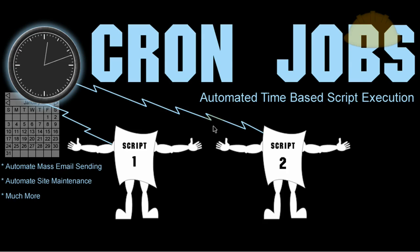Hello everybody, Adam at Flash Building. Here we have a lesson geared for people who are not yet acquainted with cron jobs. A cron job is an automated time-based script execution command that you set up at your server. It fires off to enable scripts to run automatically, so you don't have to go to your browser to make a script execute. It can be run behind the scenes, and it's time or date based.